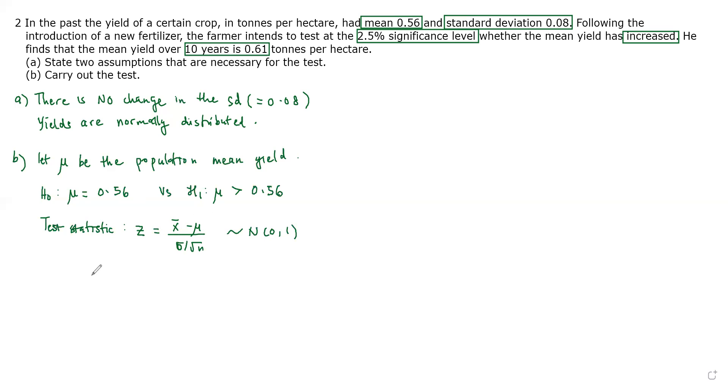We can compute the value of the test statistics. x̄ is 0.61 and n is 10 years. So for this case, the value of the test statistics is 0.61 minus the mean, which is always from the null hypothesis, the population mean, and we assume that the standard deviation is 0.08 over square root of 10. The value of the test statistics that we have is 1.976.